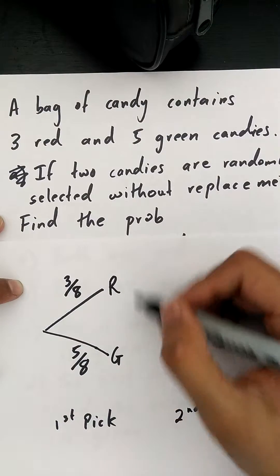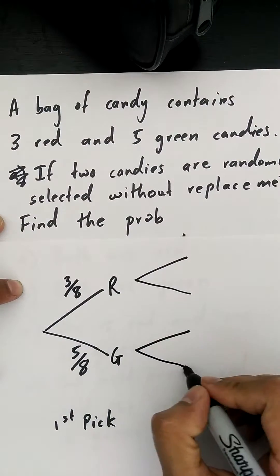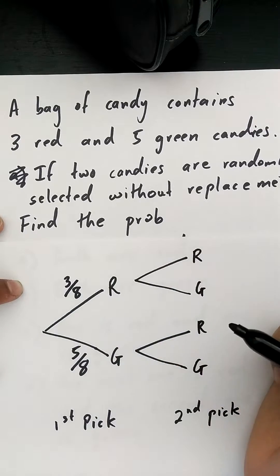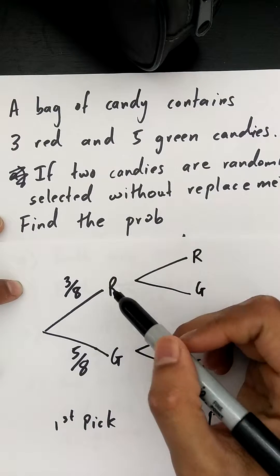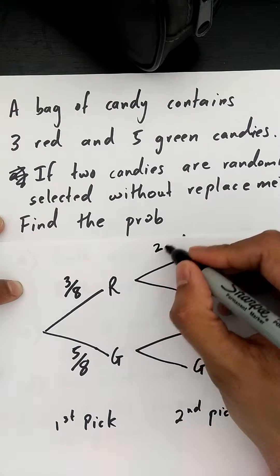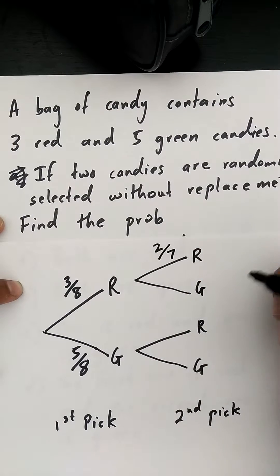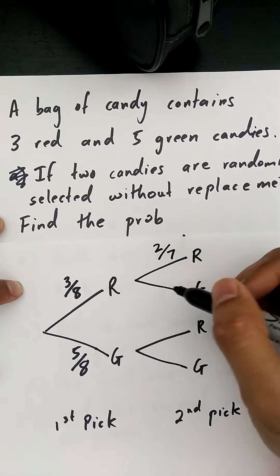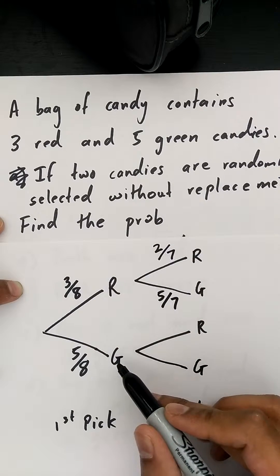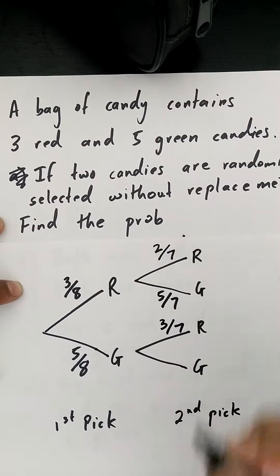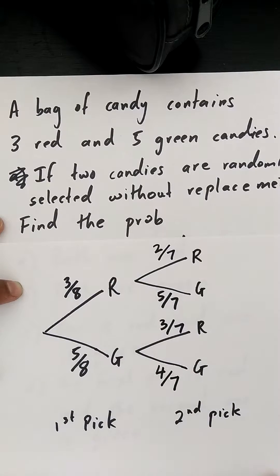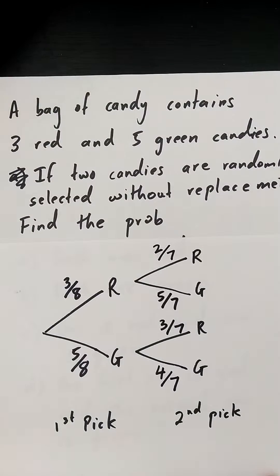For the second pick, I again have two possibilities for each branch: red or green. If I picked one red candy first, I had three red candies so two remain, and seven total remain in the bag. I still have all five green candies, so that branch is five out of seven. If I pick green first, I still have all three red ones, but only four green left out of seven total remaining.